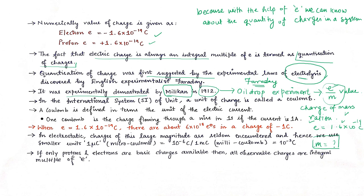In the SI (International System of Units), the unit of charge is coulomb, spelled C-O-U-L-O-M-B and denoted by capital C. Charge equals current multiplied by time: Q = I × T, where charge is in coulombs, current is in amperes, and time is in seconds. So 1 coulomb = 1 ampere-second.